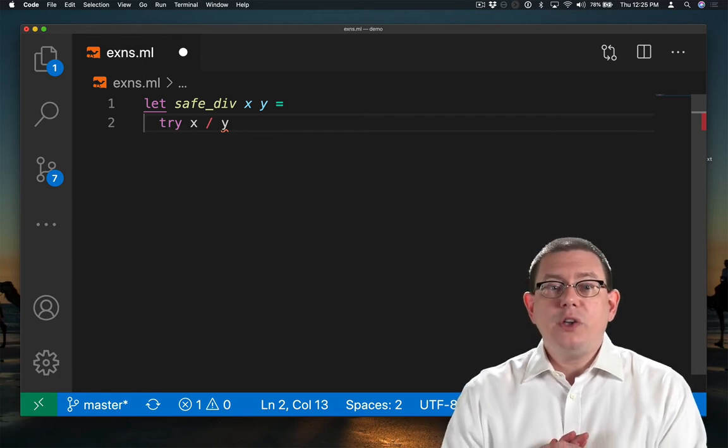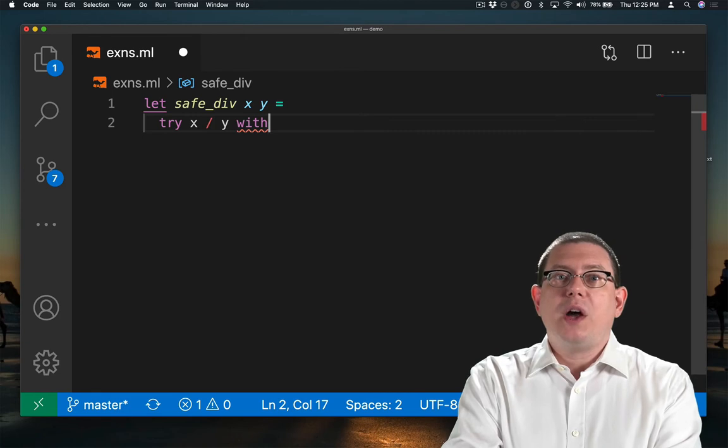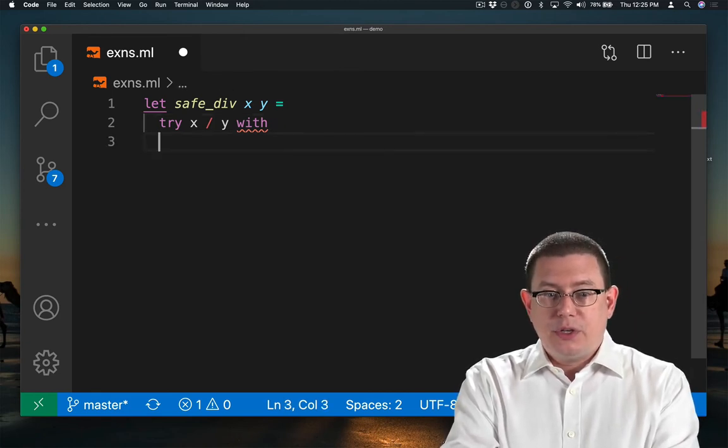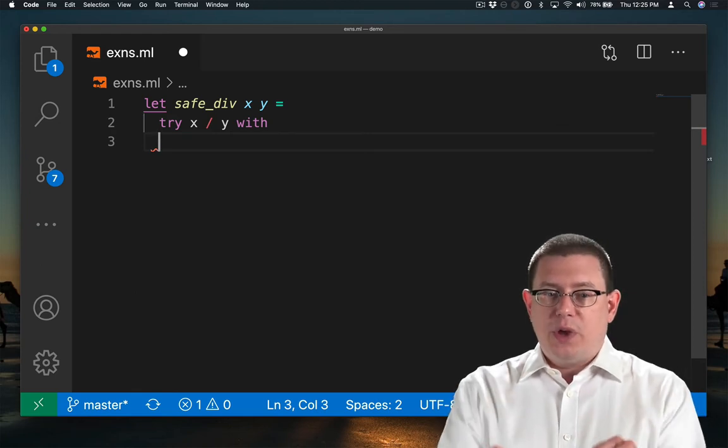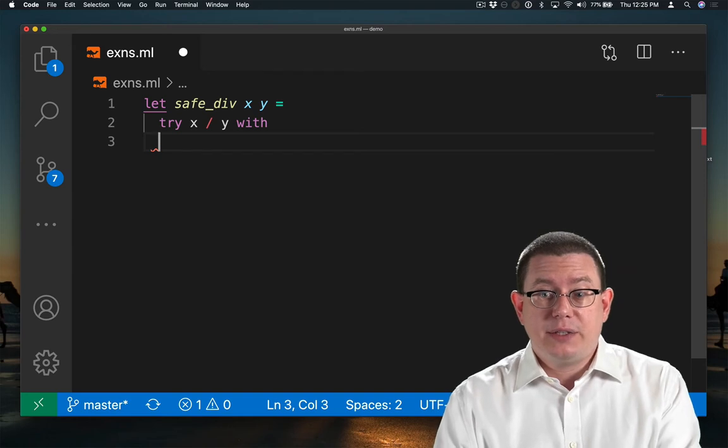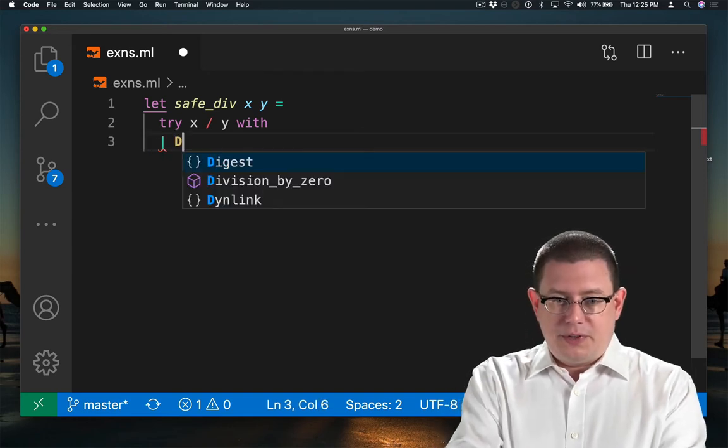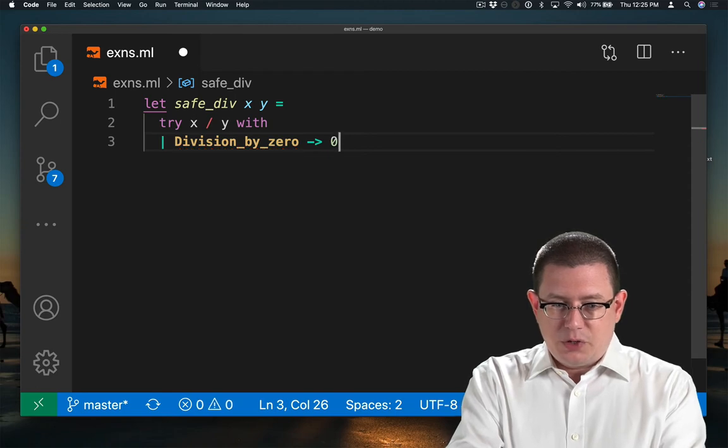But if evaluation of x divided by y raises an exception, we can go on and pattern match against that exception. So this is just like match with, except now it's try with. And we're only going to pattern match in the case an exception gets raised. So if the division by zero exception gets raised, then what we decided was we would return zero.